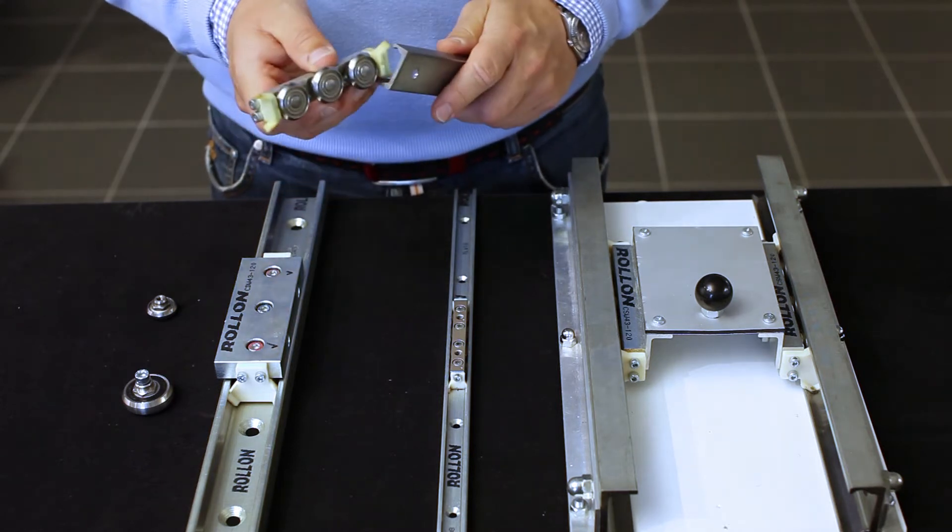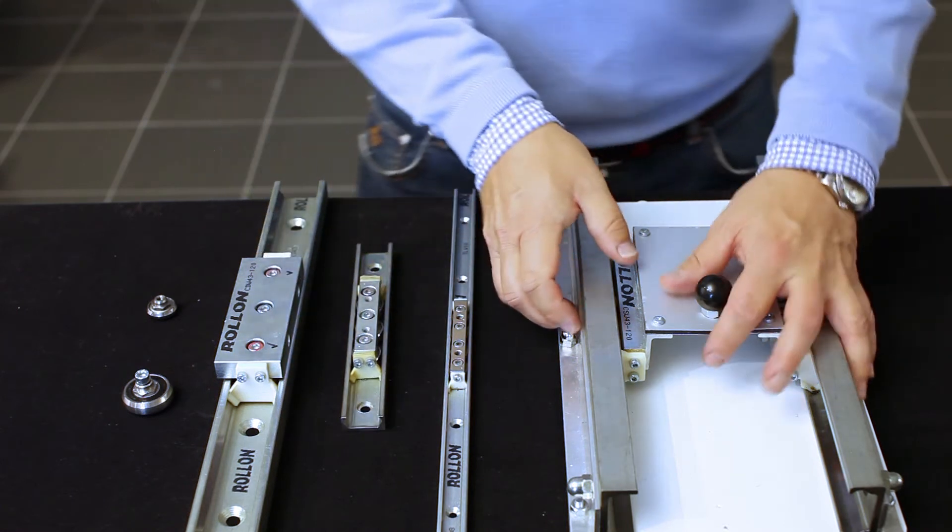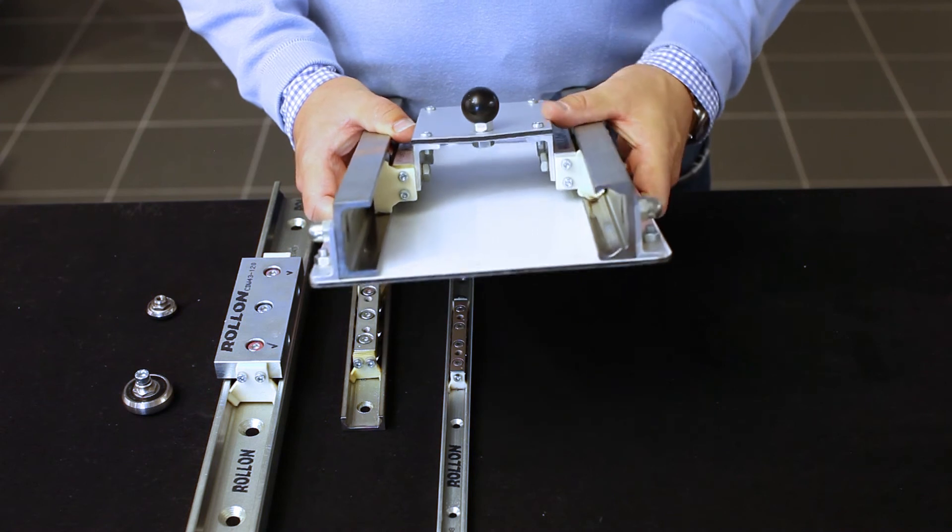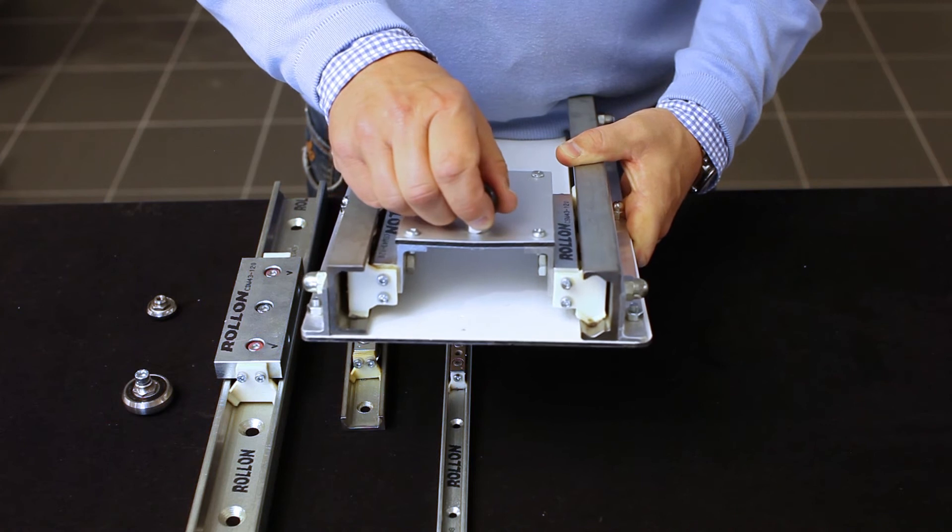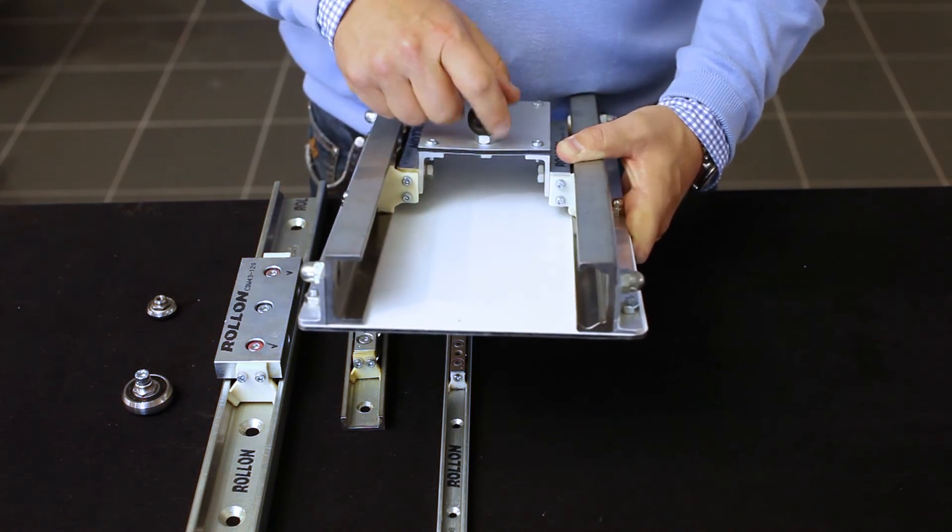A combination of T and U rail, as you can see here, can absorb parallelism errors up to 4 millimeters between the two rails.